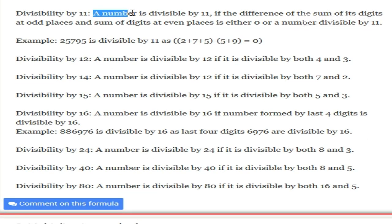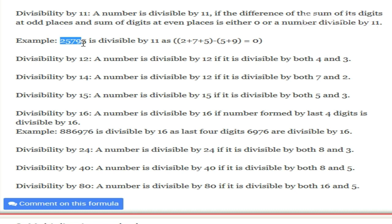Divisibility by 11: a number is divisible by 11 if the difference of the sum of its digits at odd places and the sum of its digits at even places is either 0 or a number divisible by 11. For example, take 25795. We sum up the odd places — 1st, 3rd, 5th: 2 plus 7 plus 5. Then subtract the even places — 2nd and 4th: 5 plus 9. The result equals 0, so this number is divisible by 11.